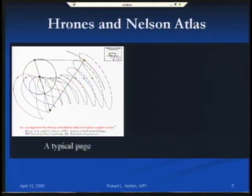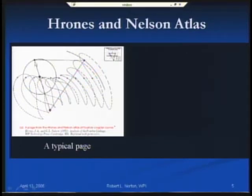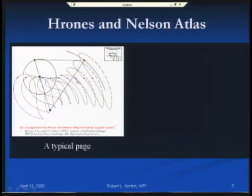I have that atlas here and I'm going to show you how to extract information from it. This figure from your book Design of Machinery shows one page from that atlas. It shows a linkage — two circles indicate a fixed pivot, a single circle indicates a moving pivot. Link two is the crank, this is the coupler pin-to-pin, this is the rocker, and this is the ground link. The dots are points on link three, and you can see a collection of different curves — here's a cusp, there's a crunode, there's another crunode, etc.